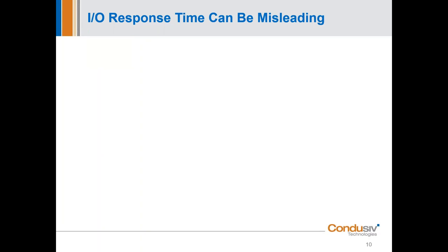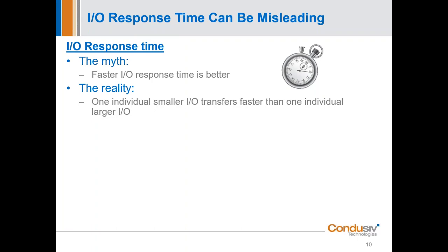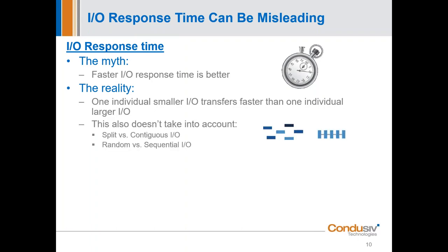The second IO fallacy is the IO response time fallacy. We like to look at sub-millisecond response times on individual IOs, and that also gives us a false sense of security because we think faster IO response time is always better — and that is not always the case. One individual smaller IO transfers faster than one individual larger IO: a 4K IO versus a 64K IO — 64K is going to take longer. This doesn't factor in the configuration of the IO: you have split IO versus contiguous IO, and random IO versus sequential IO, and all three factors play in significantly.